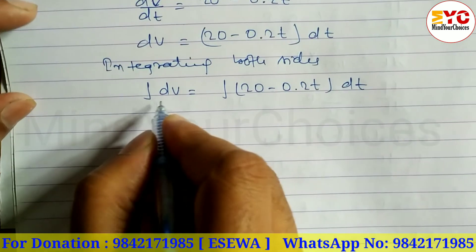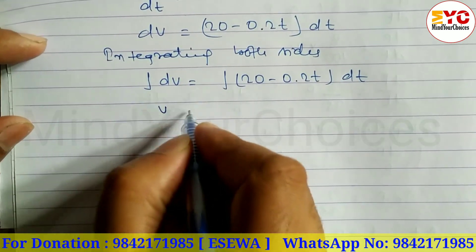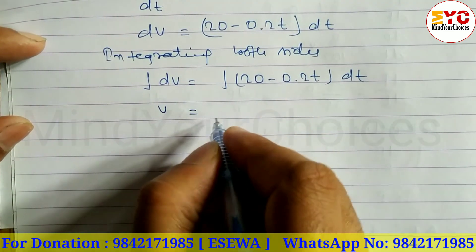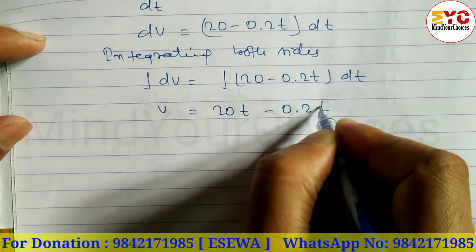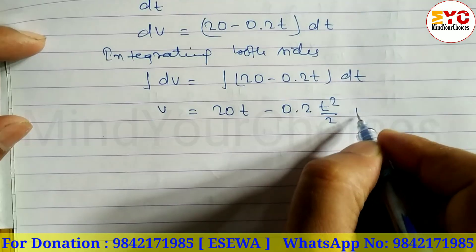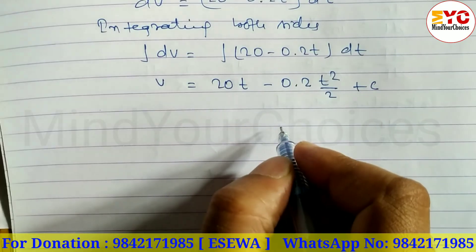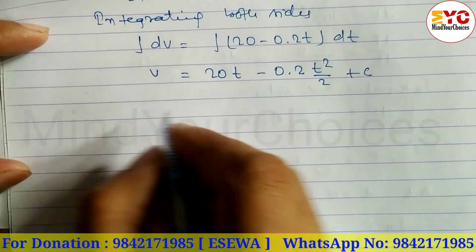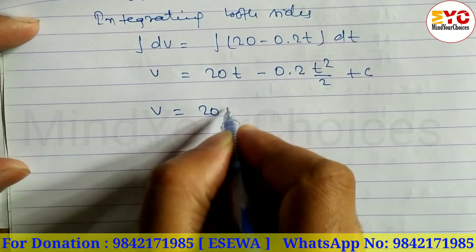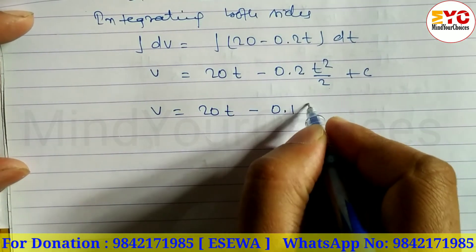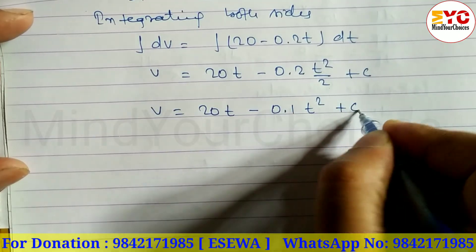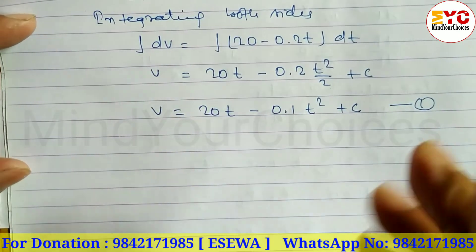Integration of dV equals integration of (20 - 0.2T) dT. Integration of dV gives us V. 20 gives 20T minus 0.2T gives T squared divided by 2, which is 0.1T squared, plus C. After that, V equals 20T minus 0.1T squared plus C, which is equation 1.